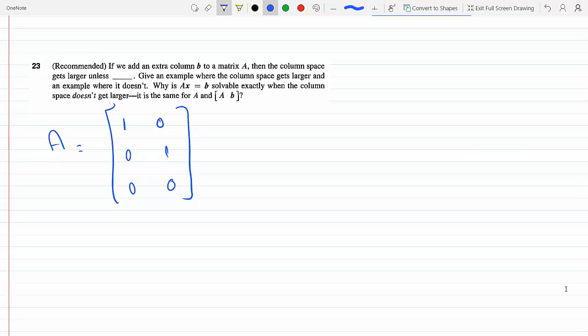And if I choose B to be [0 0 5], then I do have a larger column space. Why? Because B is not in the column space of A, because this column is not a multiple of any of the columns of A.